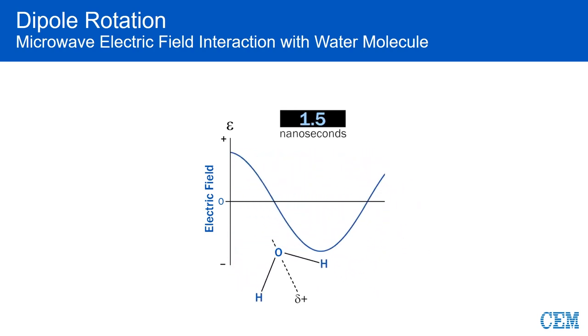In a liquid state, molecules are packed rather tightly together, and so this rotation causes them to bump into each other. This causes friction, which causes rapid heating.